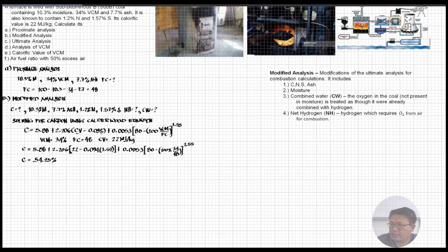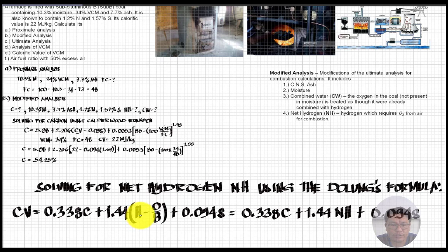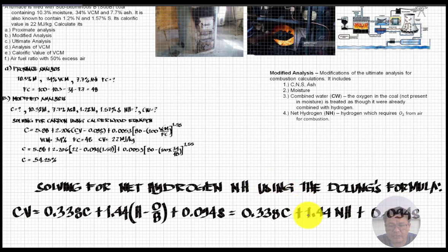Next, we solve for the net hydrogen using Dulong's formula. The Dulong's formula for calorific value is: CV = 0.338 × Carbon + 1.44 × (H − O/8) + 0.094 × Sulfur. This simplifies to: CV = 0.338 × Carbon + 1.44 × (net hydrogen) + 0.094 × Sulfur. We can rearrange this equation to solve for net hydrogen.